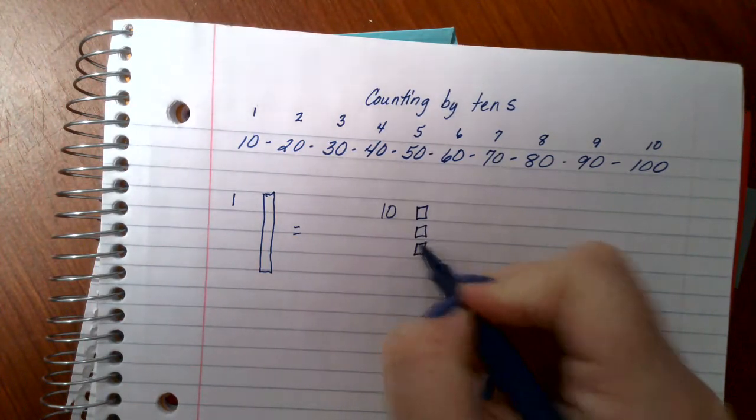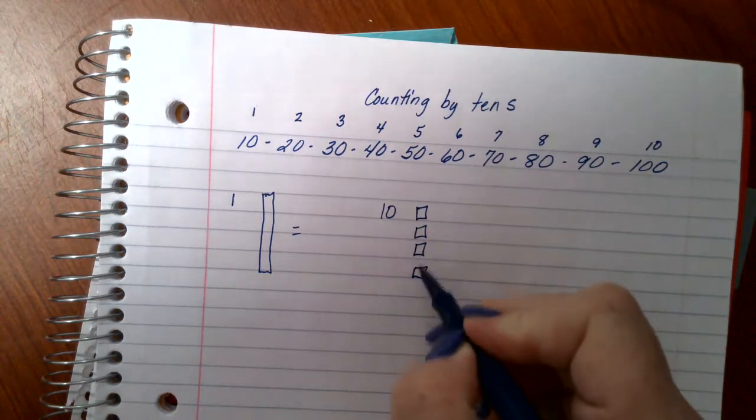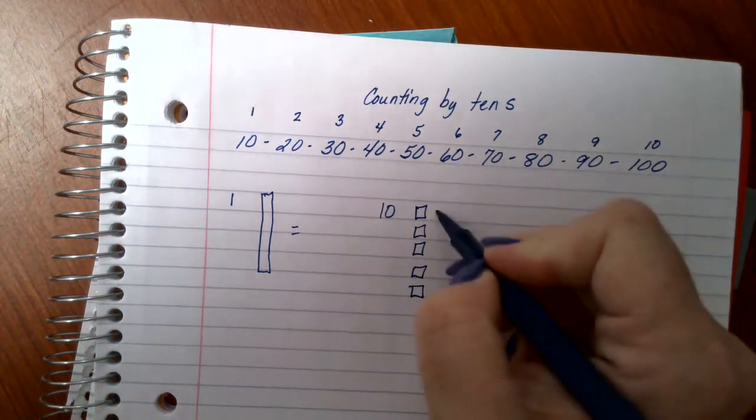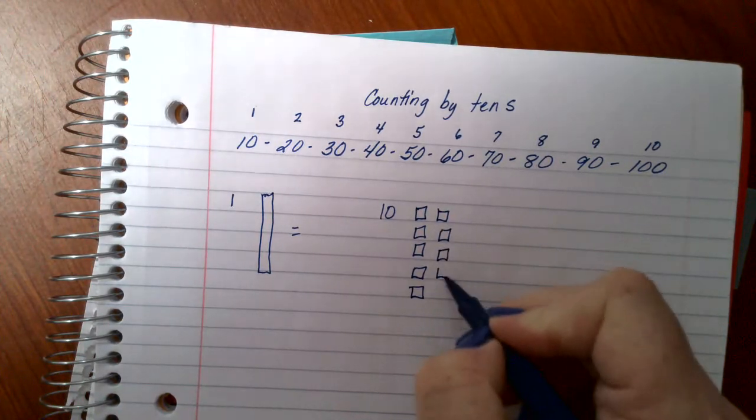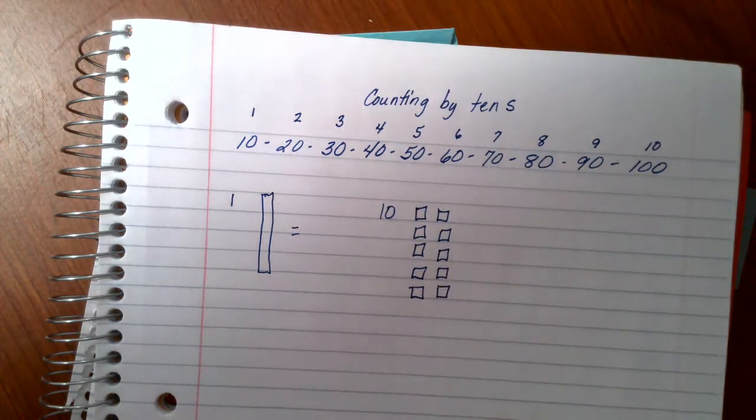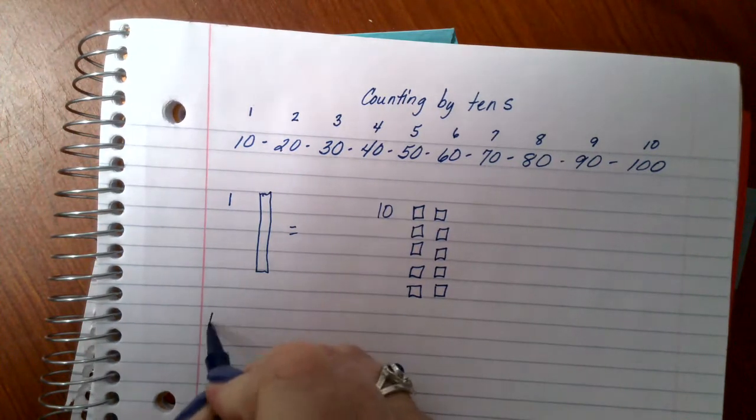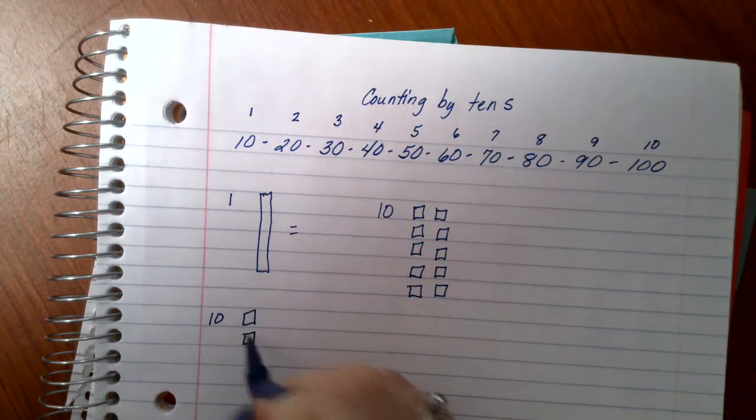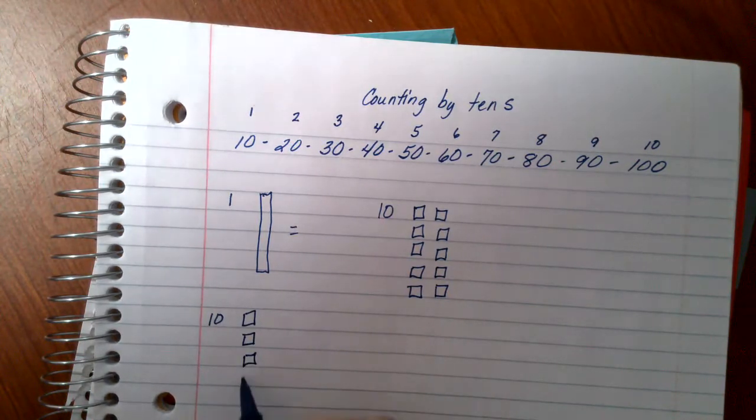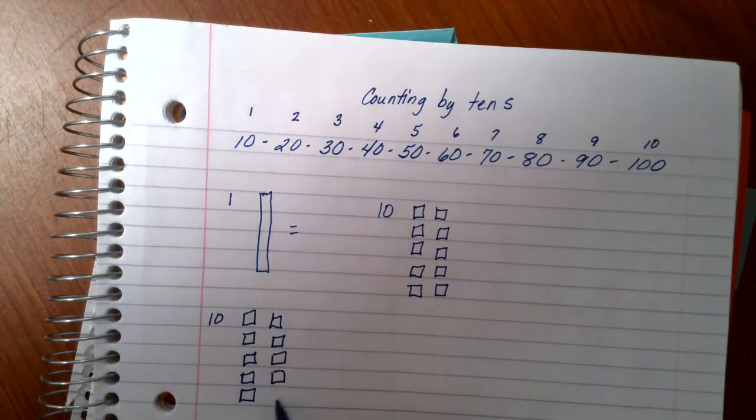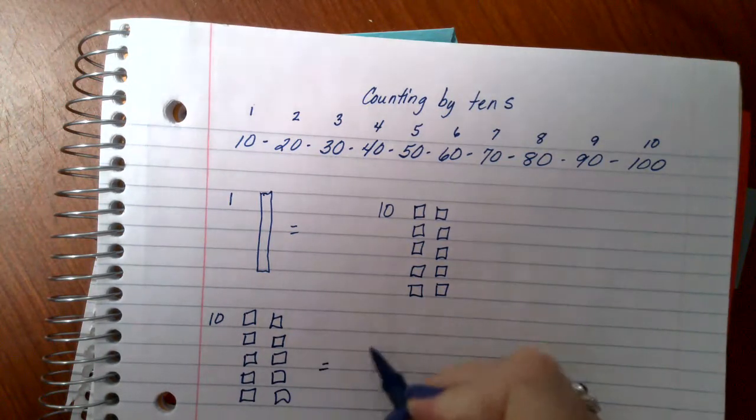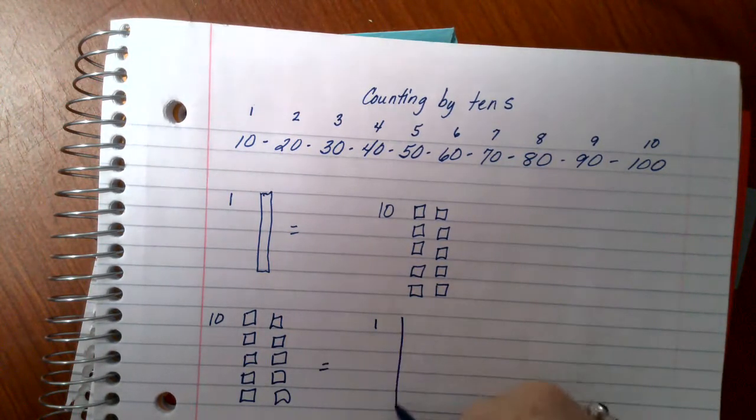one, two, three, four, five, six, seven, eight, nine, ten, then we can say the same thing the other way, that ten ones equals one ten.